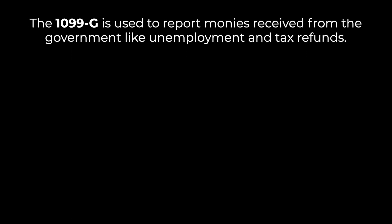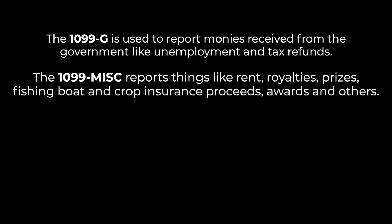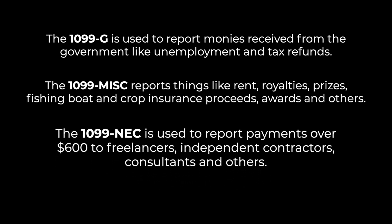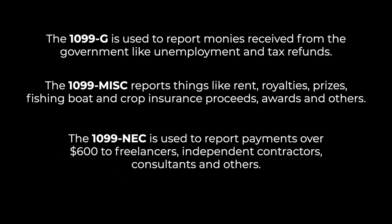Now what's the difference between a 1099-G, a 1099-MIS, and a 1099-NEC? 1099 forms are a category of forms used to report other types of income that are separate from those someone would earn if they were full-time or part-time employees. The 1099-G is used to report monies received from the government like unemployment and tax refunds. The 1099-MIS reports things like rent, royalties, prizes, fishing boat and crop insurance proceeds, and awards. The 1099-NEC is used to report payments over $600 to freelancers, independent contractors, consultants, and others.